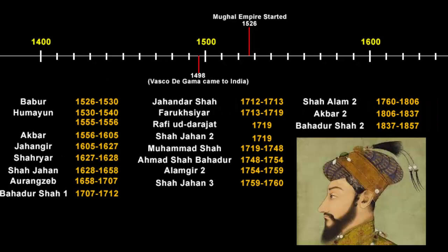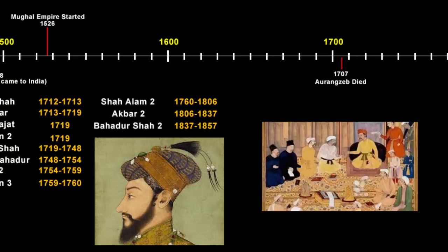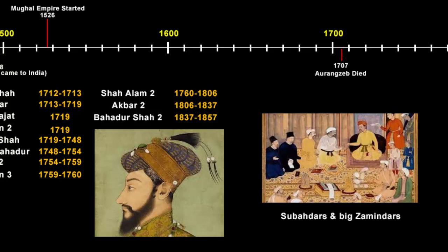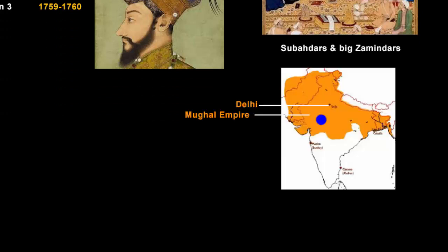Aurangzeb was the last powerful Mughal ruler, but he died in 1707. We'll now put this date on the timeline. As soon as a powerful influential ruler died, all of his governors — also known as Subedars and the big Zamindars — slowly started dividing, because it was now beneficial for them to establish their own small regional kingdoms. It's like now the emperor is dead, so forget Delhi, forget the center. Let's get back to our regional places and establish our own rule.